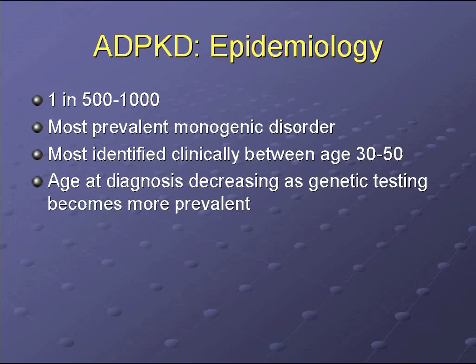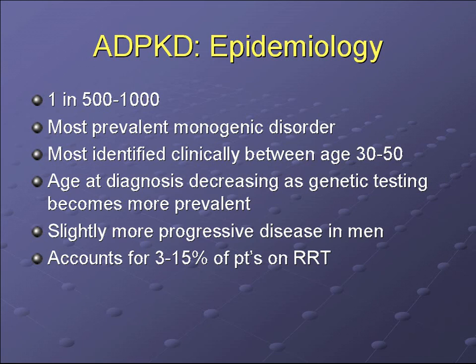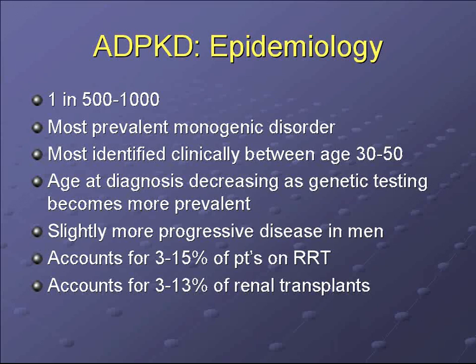ADPKD is present in 1 in 500 to 1 in 1,000, depending on the series. It's the most prevalent monogenic disorder. Most are identified clinically when patients are between 30 and 50 years of age, but the age of diagnosis is decreasing as genetic testing becomes more prevalent. The disease is slightly more progressive in men and accounts for 3 to 15% of patients on renal replacement therapy and 3 to 13% of renal transplant patients.